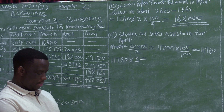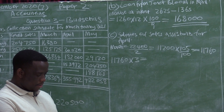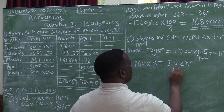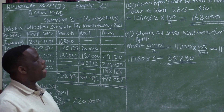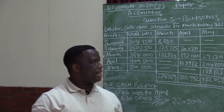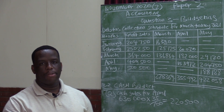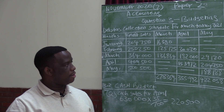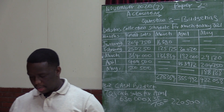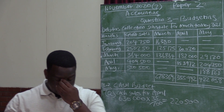So we have 11,760 — the new salary after the increment — multiplied by 3 assistants. 11,760 multiplied by 3 equals 35,280. The salaries of the sales assistants for April will be 35,280. Alphabet C has now been solved — we know how much will be paid to our sales assistants in April.